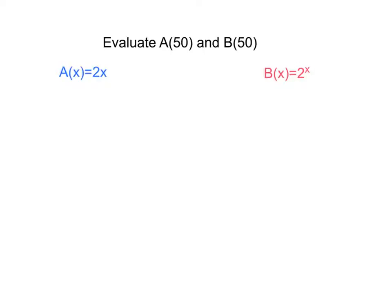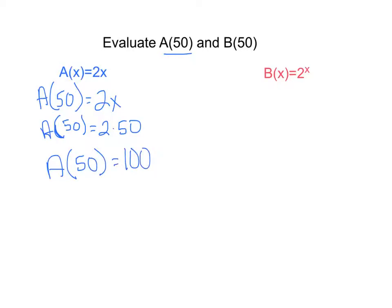Now let's look at what happens when we try to evaluate these two functions. Let's look at A of X equals 2X, and we want to evaluate A of 50. So A of 50 equals 2X, and basically all we're doing is we're plugging numbers in. A of 50 is equal to 100. That's a pretty decent number. If you plug in 50, you get double that back.